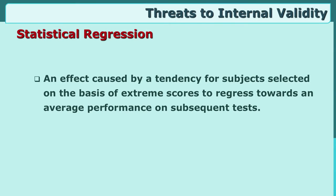Another threat to internal validity is Statistical Regression. Regression means coming back. If we take extreme scores — on a 0 to 100 scale — there is a tendency for scores to regress towards the mean. This is a natural tendency of scores to come down, and you may feel they are coming down because of your independent variable, which may not be true. So we have to take care of statistical regression of your scores.